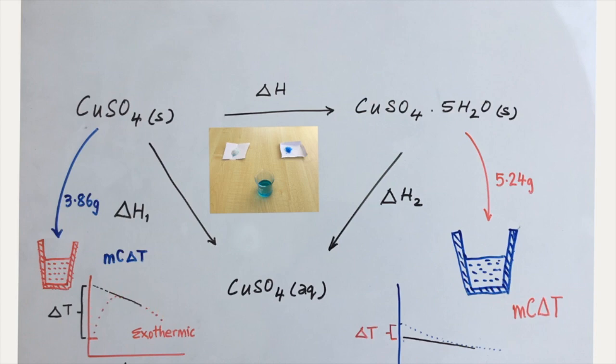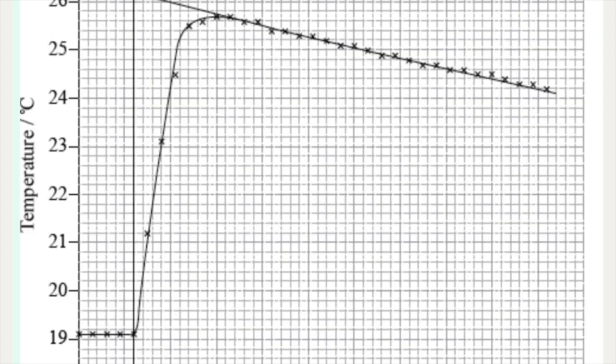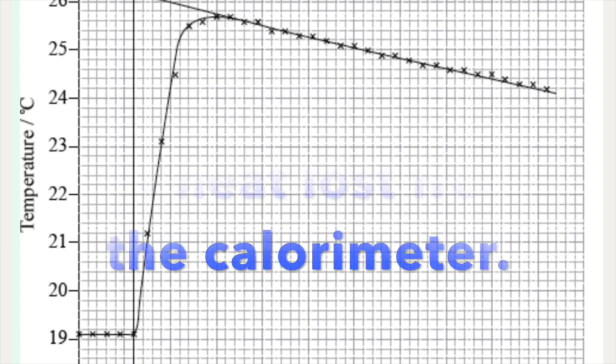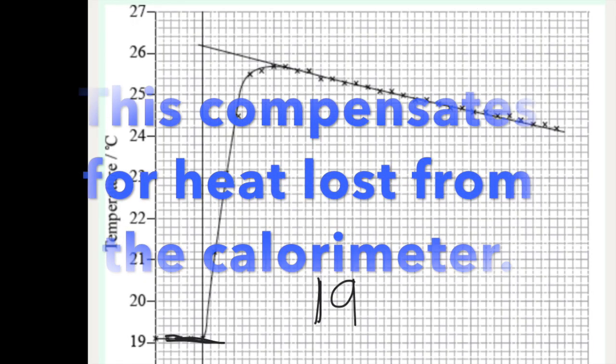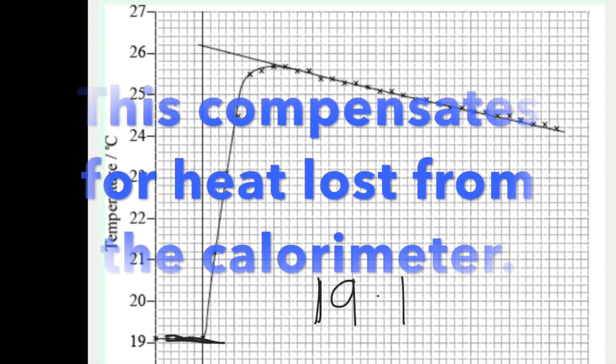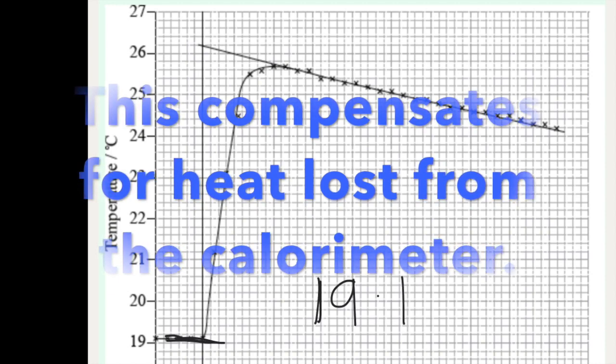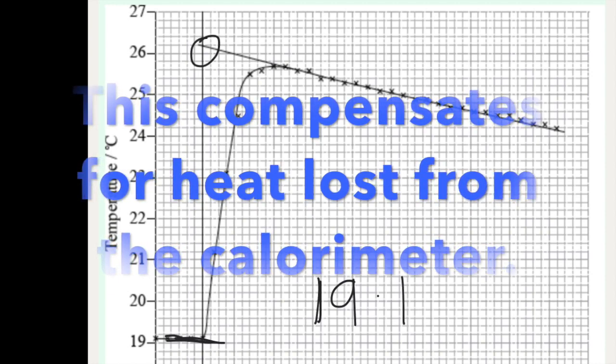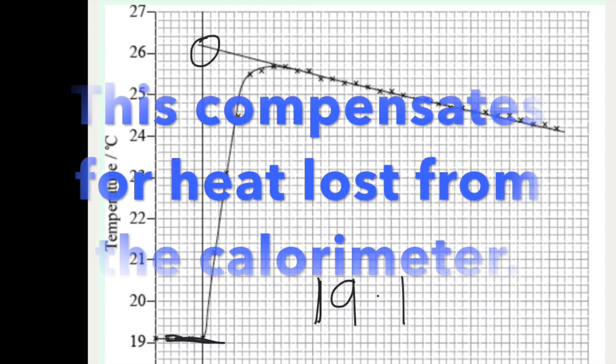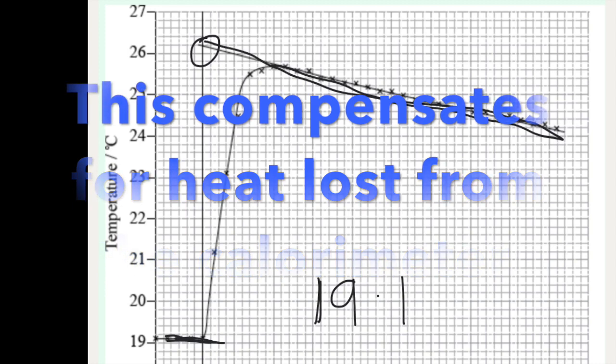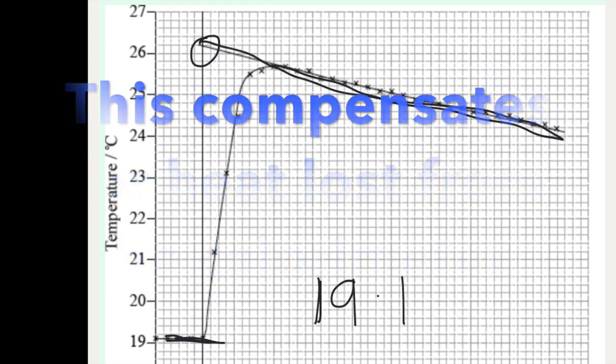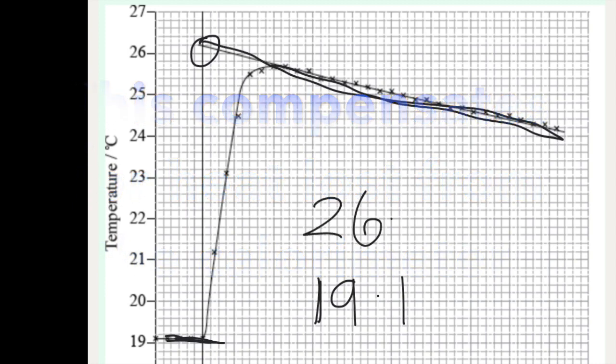The extent of this temperature change can be determined from a graph like this. And here you can see the initial temperature of 19.1 degrees Celsius and the final temperature of 26.2 degrees Celsius. Obtained by drawing a straight line through all of these points and extrapolating to the y-axis, you get 26.2. So that delta T then comes to 7.1 degrees.